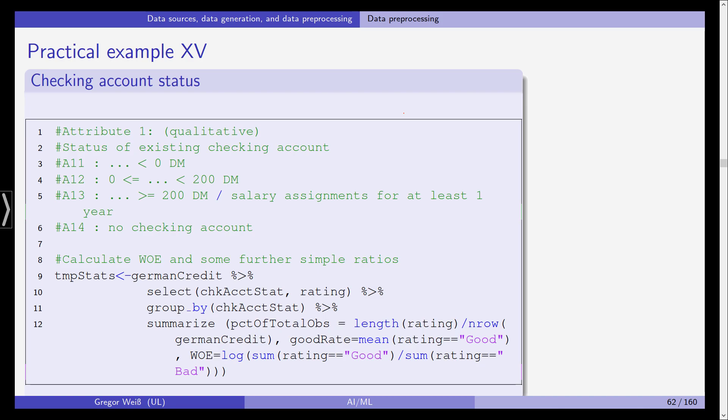Let's do this for the checking account status. So we'll use the first attribute, which is a qualitative one. Remember that we have four levels: below 0 Deutschmark, between 0 and 200 Deutschmarks, more than 200 and no checking account. So four different levels and we calculate the weight of evidence and some further simple ratios to compare them to the weight of evidence.